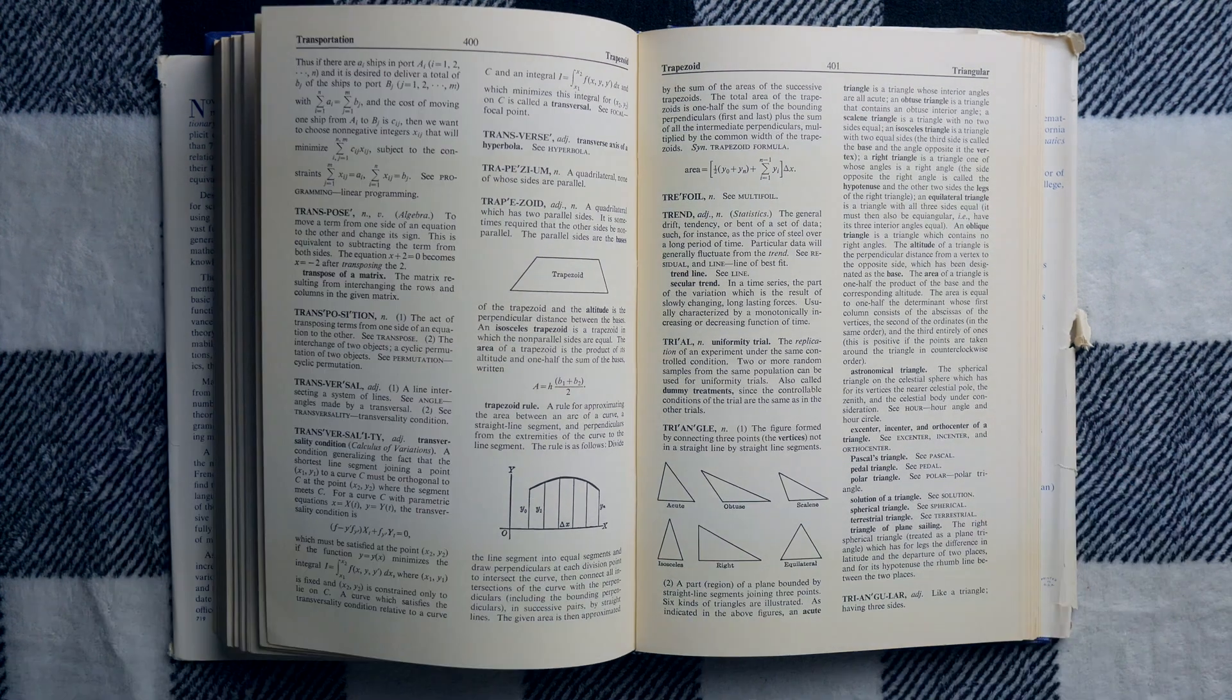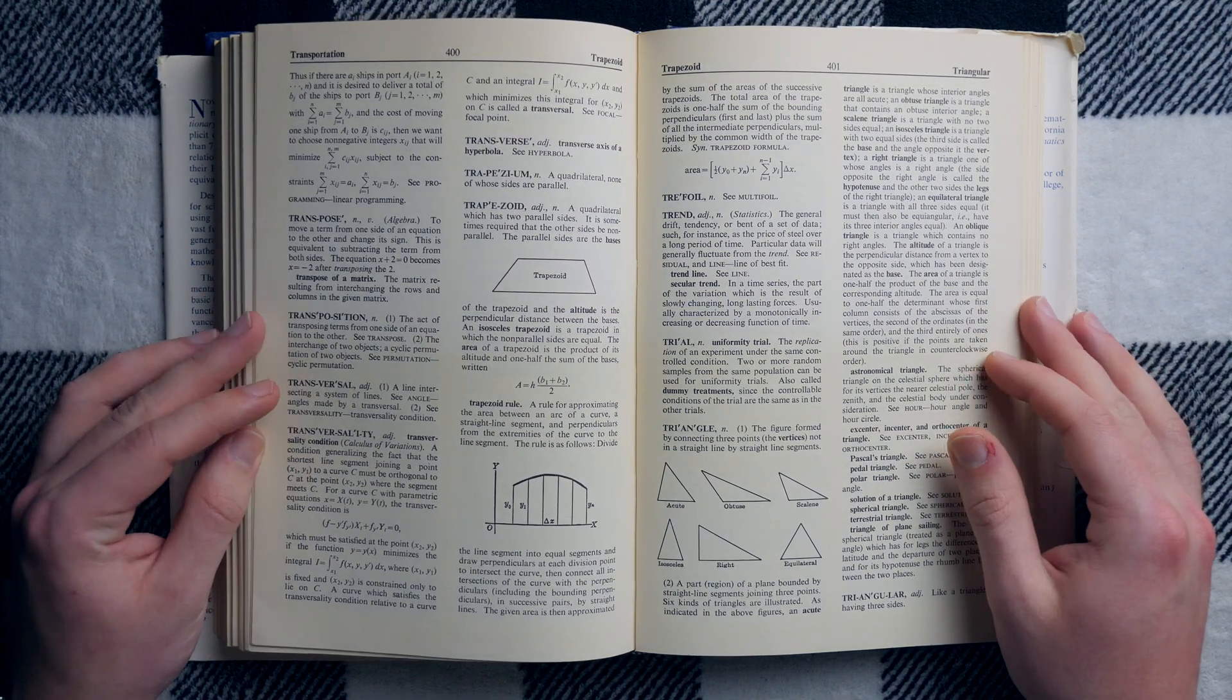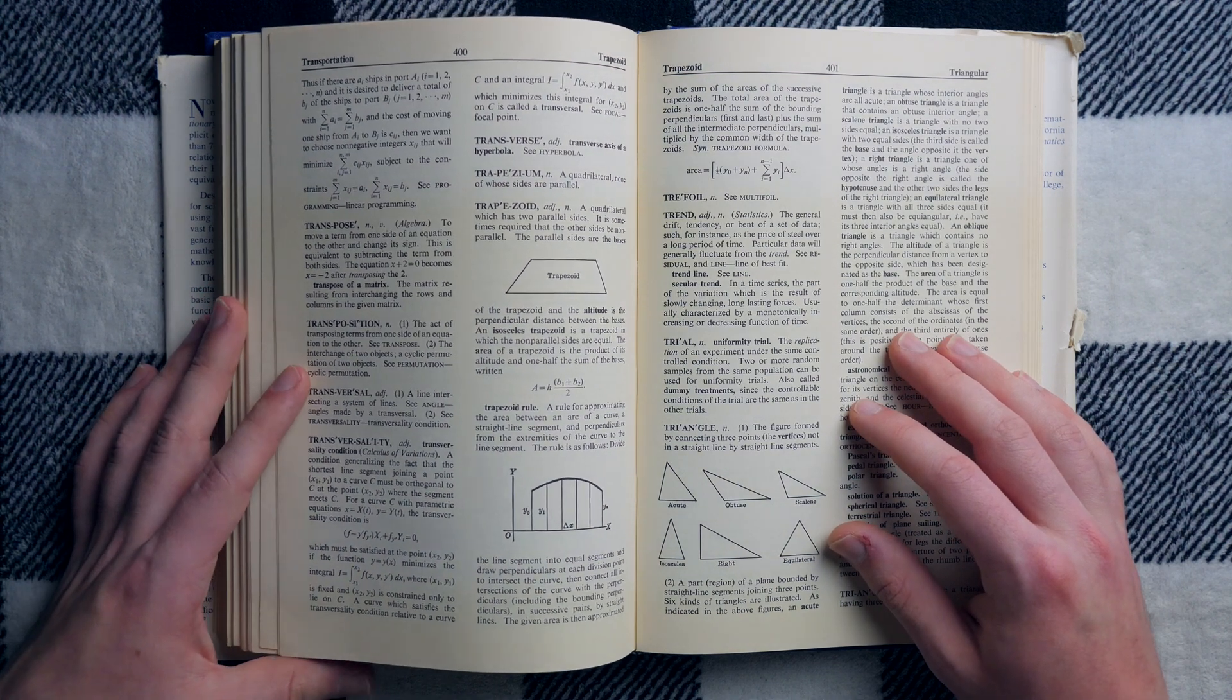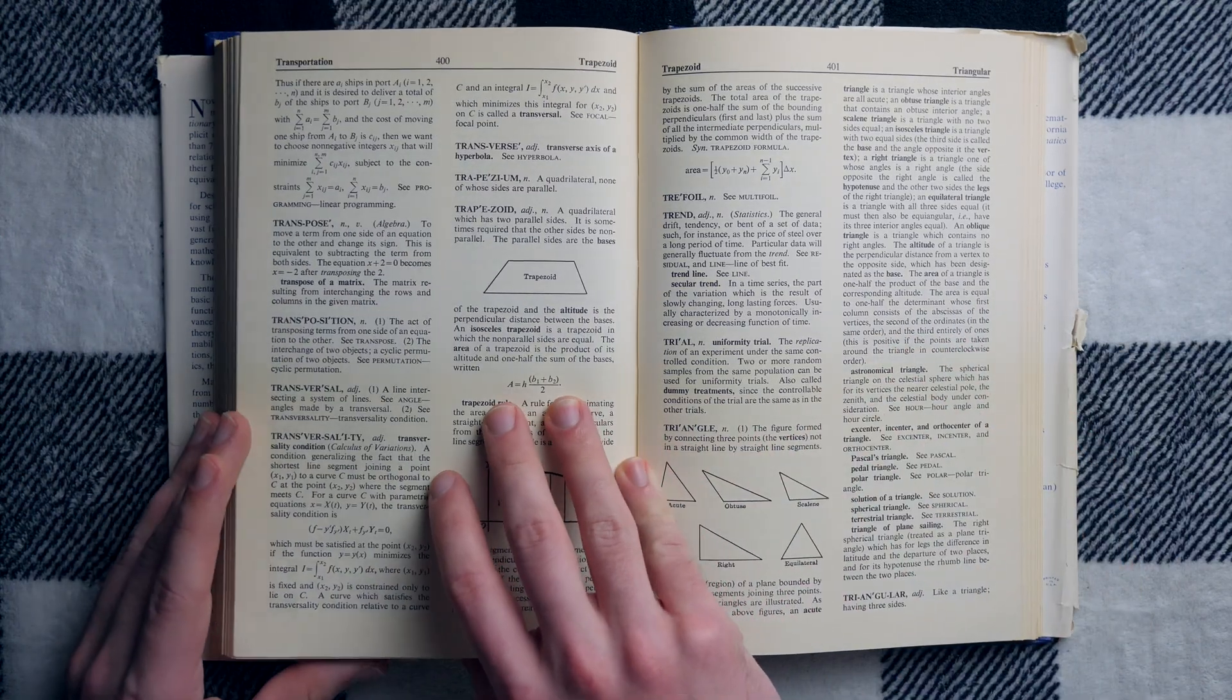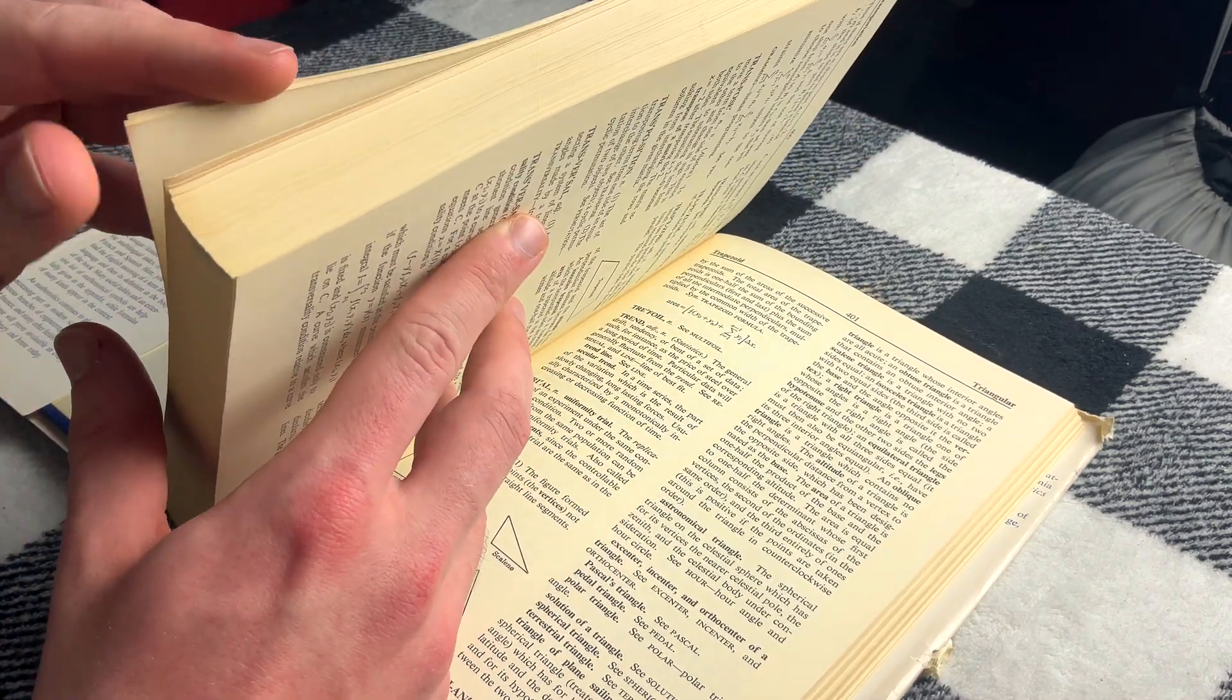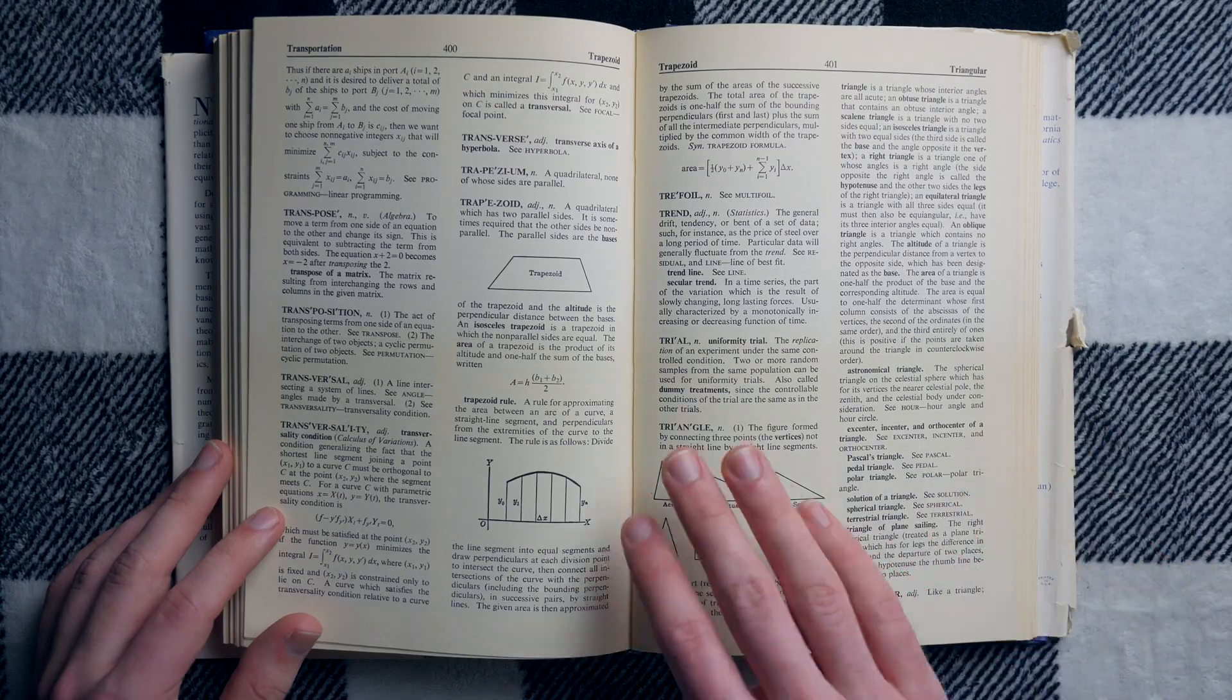Now, I know that graph theory is a fairly modern field of math. I just looked it up. It turns out the first graph theory textbook was actually published in 1936 by Dene Conig. I don't know how to pronounce his name, but 1936. So, you know, that's like 30 years before this book was published. So I don't know. I'm surprised it doesn't have any graph stuff. Oh, well, we're here at the T's. What does it say about a trapezoid?